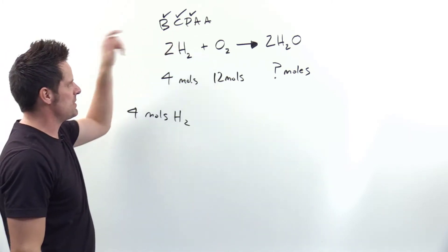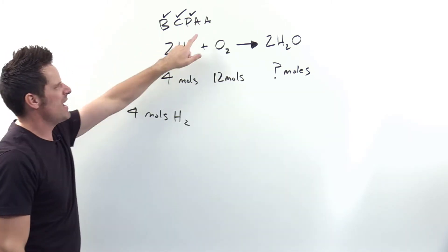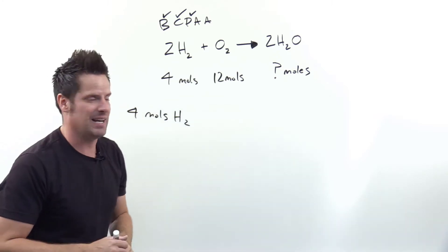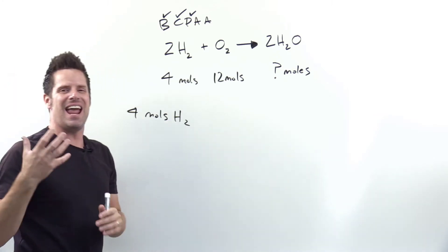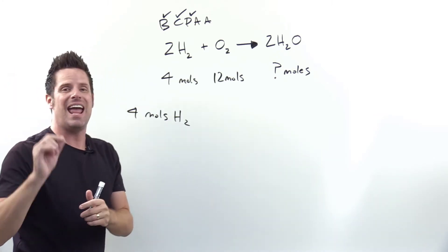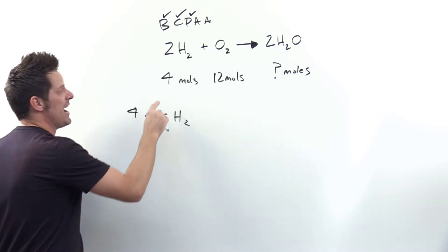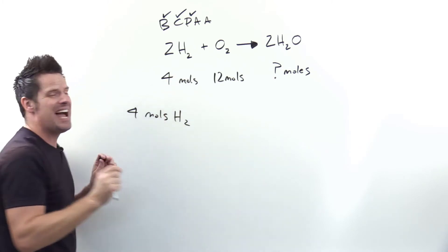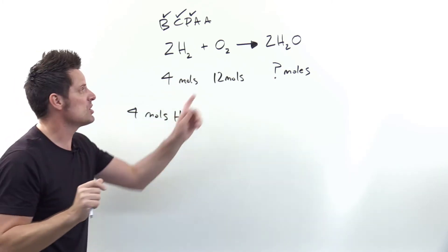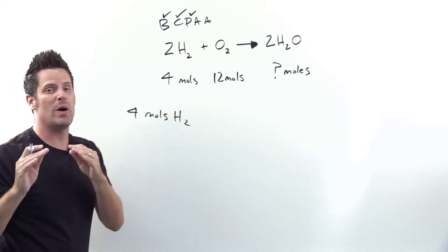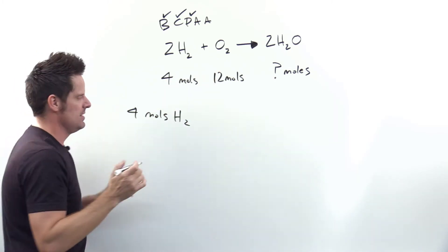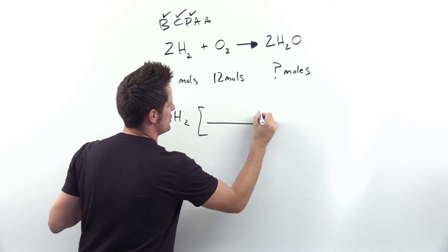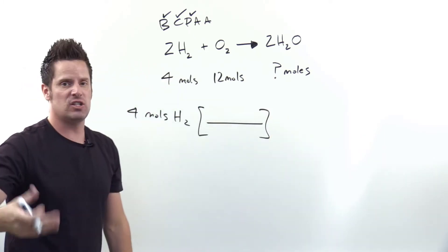Now that we've gone through the first three steps of BICPA, we have to go to step A, which is a little bit more complicated. Step A stands for answer the following question: if I have four moles of H2, how many moles of O2 do I need? We'll do this using principles of dimensional analysis and unit conversion, discussed in an earlier video linked in the description below.